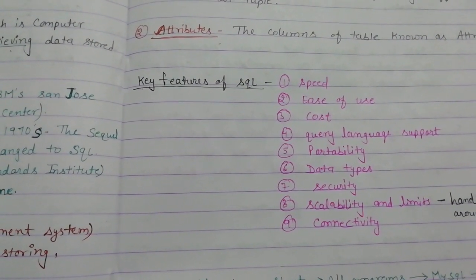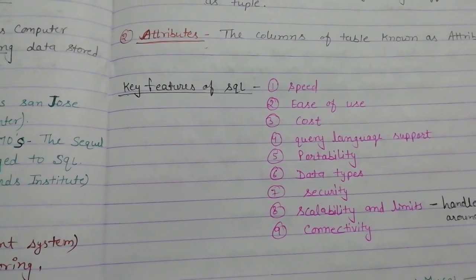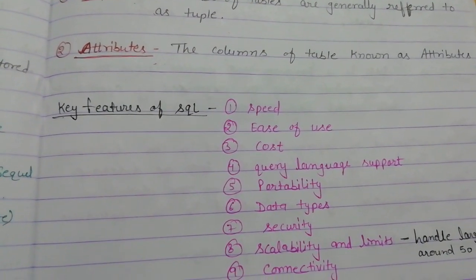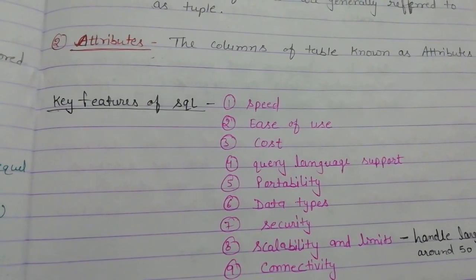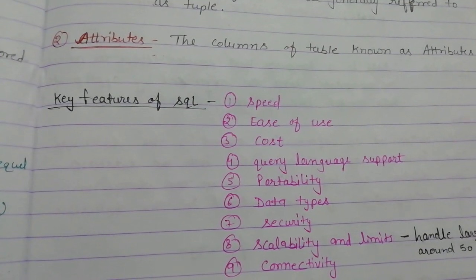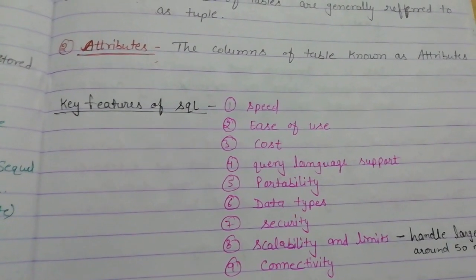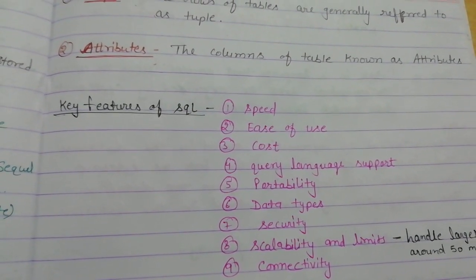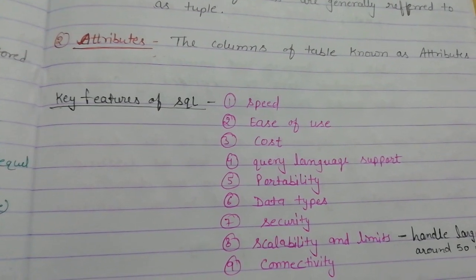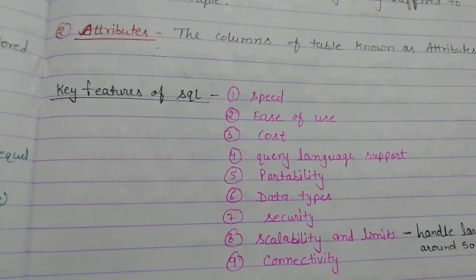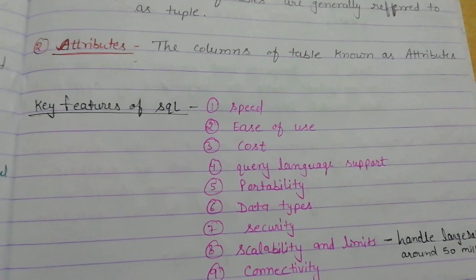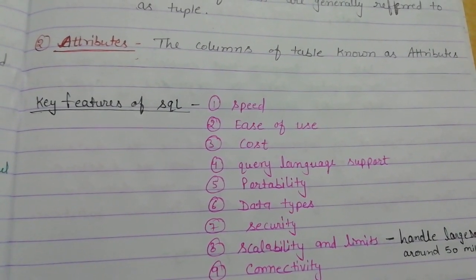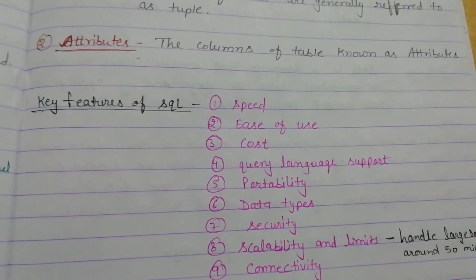We are discussing the key features of SQL. First, speed — some data can be easily processed. Second, ease of use — it can be easily maintained or used. Third, cost — the software purchasing amount can be managed. Fourth, query language support — all activities are performed on commands and queries, that's why query manipulation is easy.